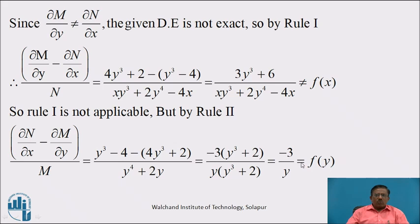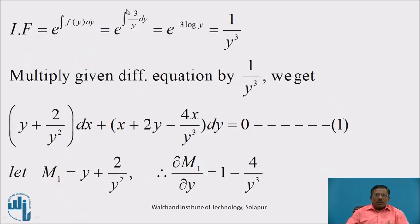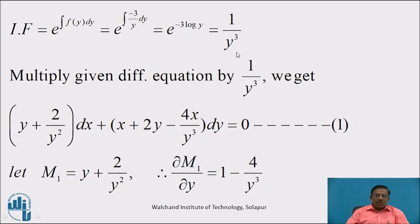Therefore Rule 2 is applicable. The integrating factor by Rule 2 is e to the power integration of f(y) dy, which equals e to the power integration of (-3/y) dy, which equals e to the power (-3 log y), that is 1/y³.